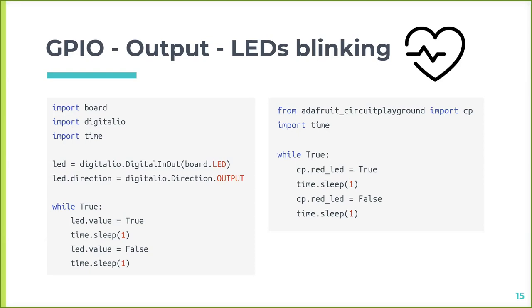The one on the right uses a Circuit Playground-specific library, which makes the code much shorter. In that case, the LED is the red LED and you don't even have to set it up as an output — just set True and False, and all that functionality is inside the library. They have a Read the Docs site that covers the library and all the different options available.